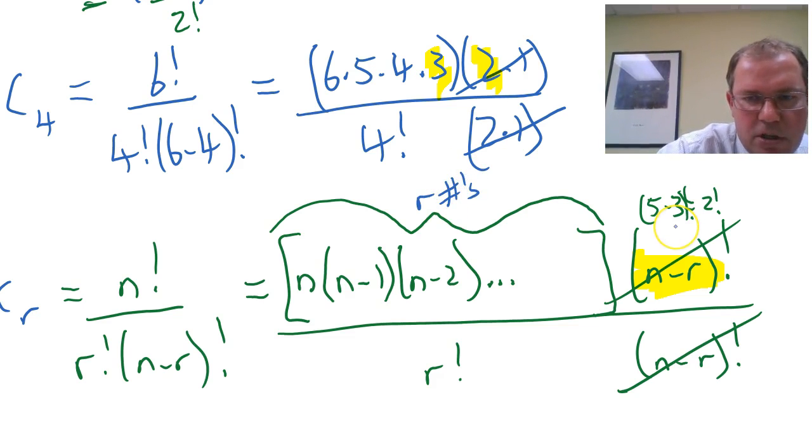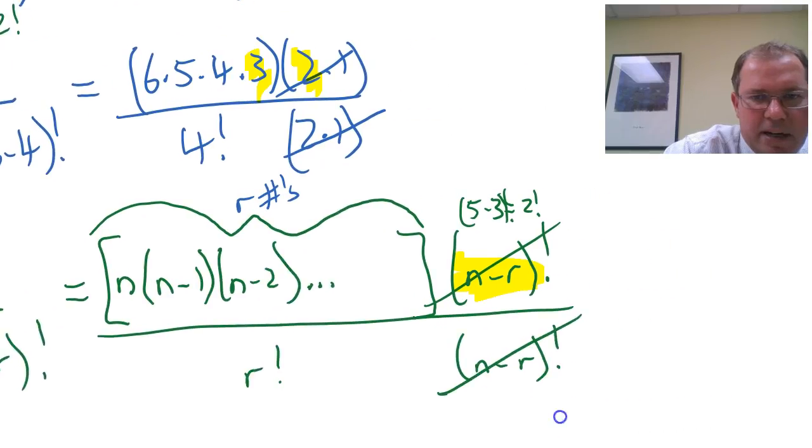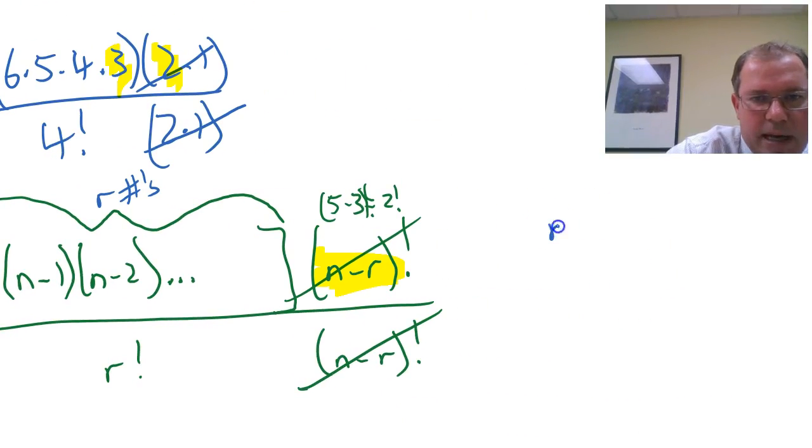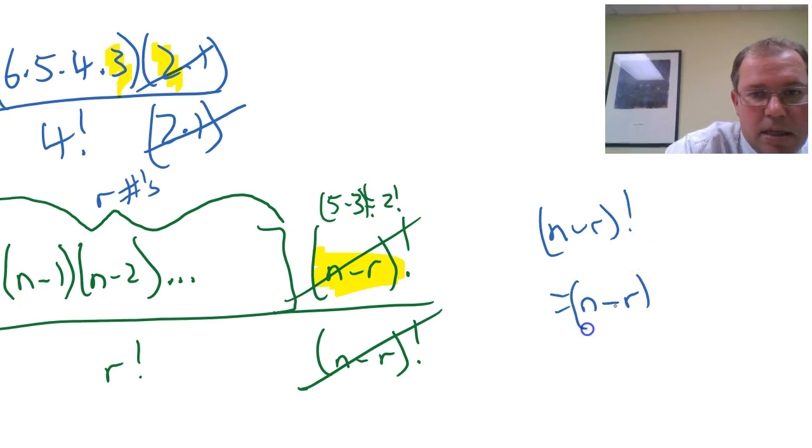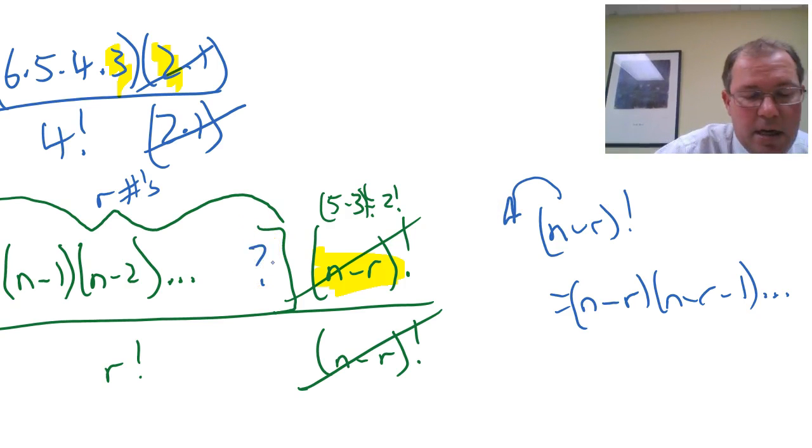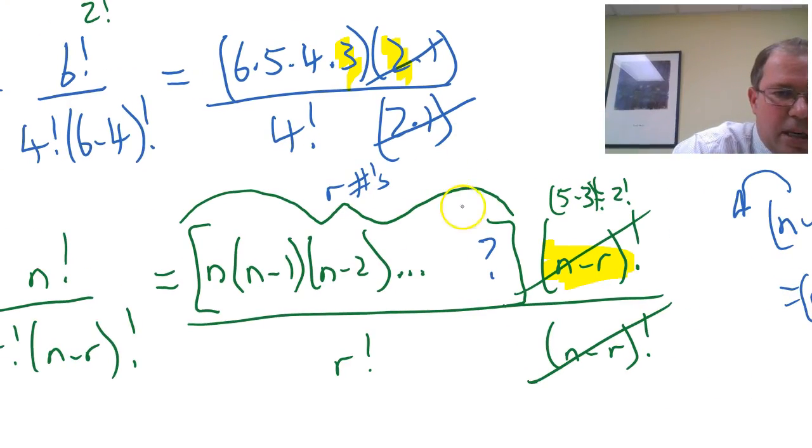Now, the first number of n minus r factorial, if I was to write n minus r factorial out fully, would be n minus r, and the next one would be n minus r minus 1, and so on. So, what's the number to the left of that? Because that would be the last number here. And, of course, it must be n minus r plus 1. And that's the tricky thing.